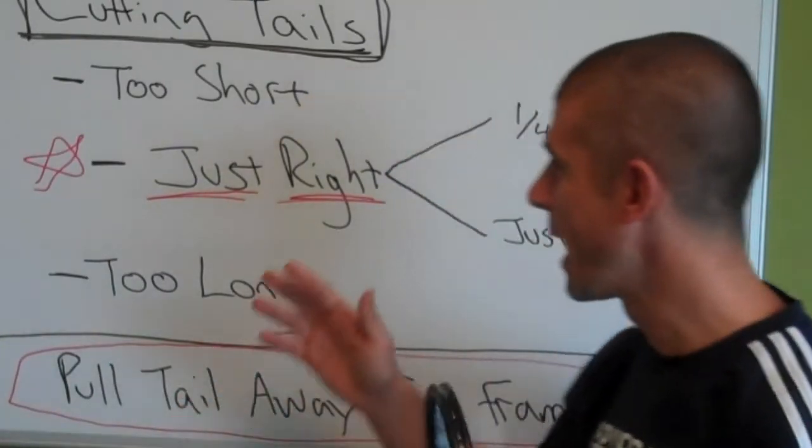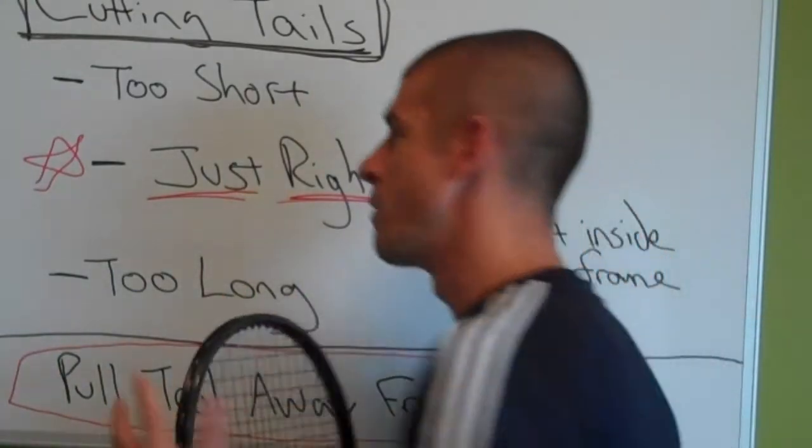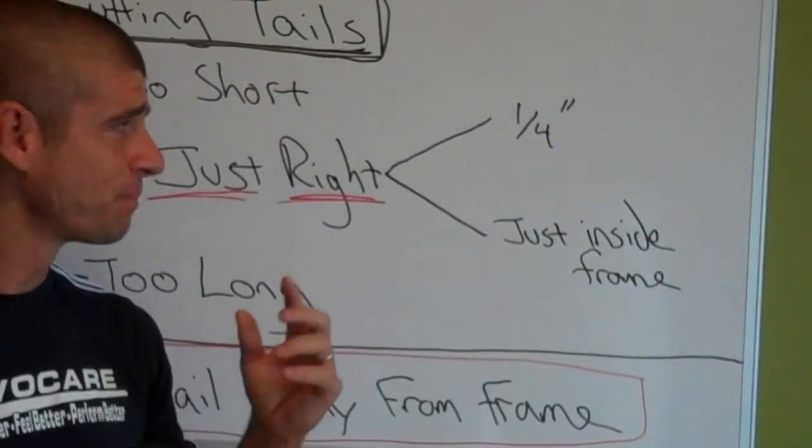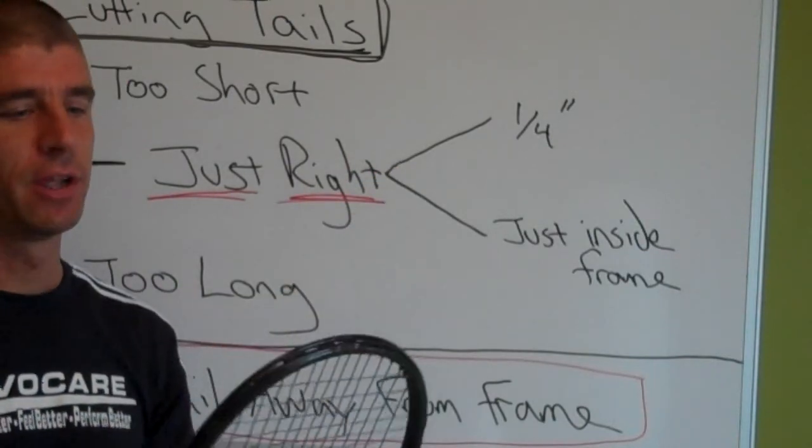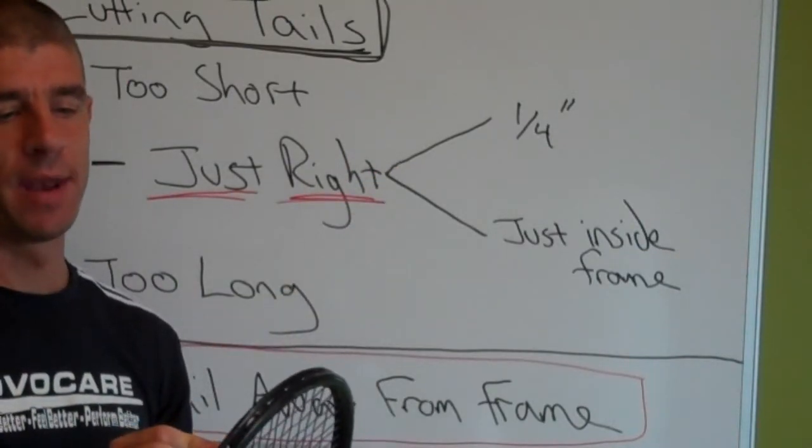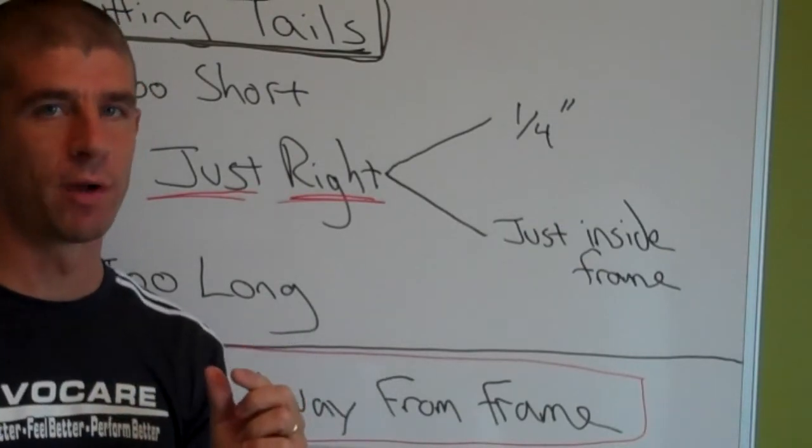And so what you want to aim for is cutting the tail just right. So what is just right? Well, in my opinion it is about a quarter of an inch. So basically from where the knot ends and the tail sticks out, make that tail about a quarter of an inch.